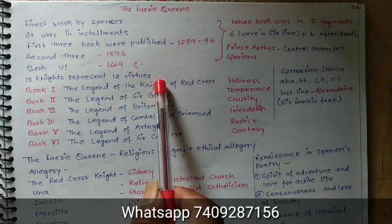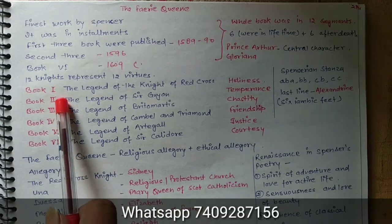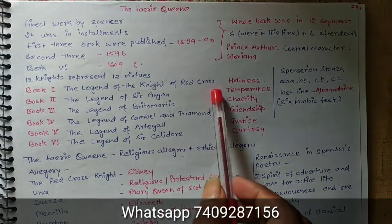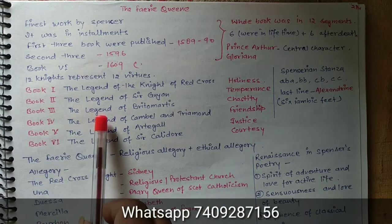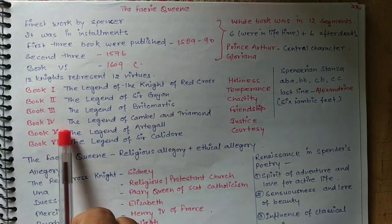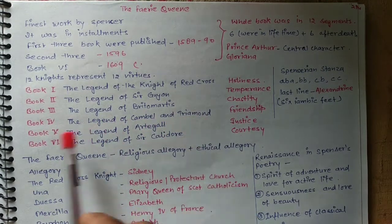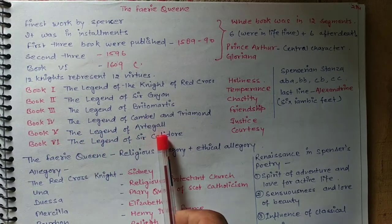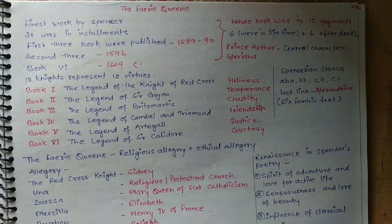The 12 books represent 12 virtues. Here we will see the six books. In the first book the lesson of the Knight of the Red Cross; in the second book the lesson of Sir Guyon; in the third book the lesson of Britomart; the fourth book is about the lesson of Cambel and Triamond; the fifth book is about the lesson of Artegall; and the sixth book the lesson of Sir Calidore.